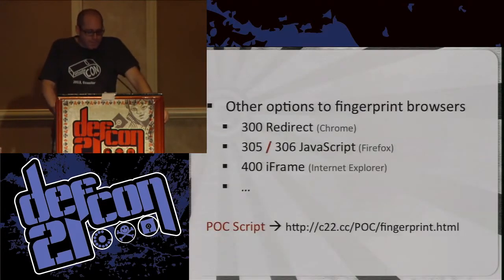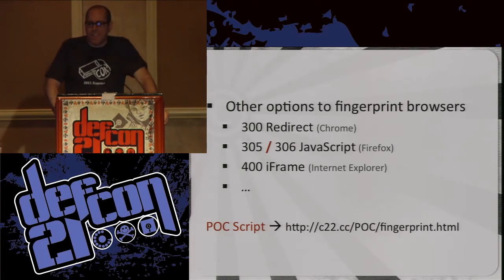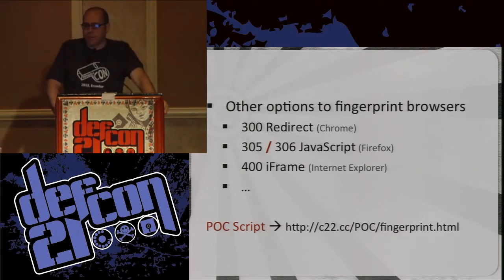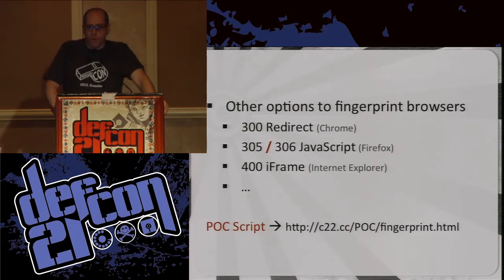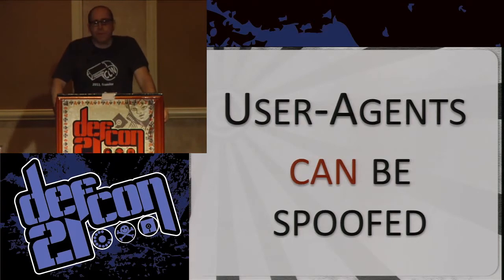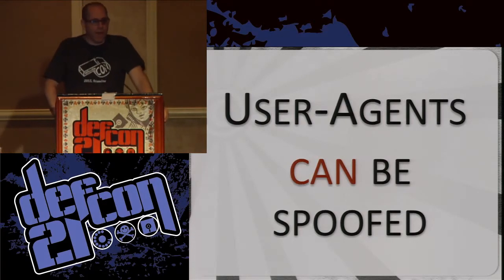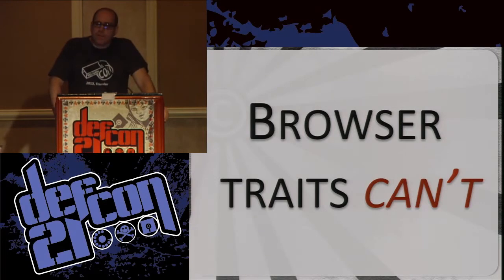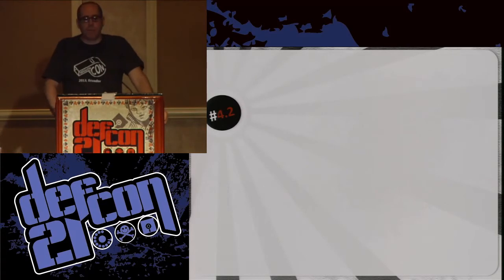There are various other options for fingerprinting. The specific option I selected was the easiest. There's a 300 redirect option and a 400 iFrame on Internet Explorer. If you want to look at the proof of concept, go to C22.CC proof of concept, fingerprint.HTML — it'll run the same example. The code is available. User agents can be spoofed — even script kiddies know that. But browser traits are really hard to fake, because your browser responds and does things in specific ways.